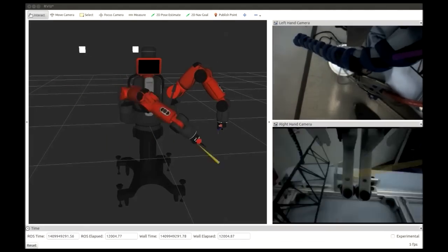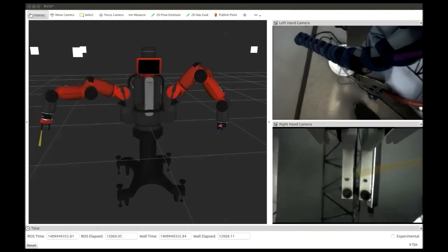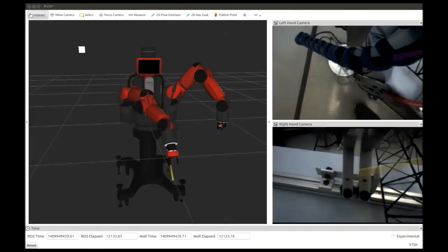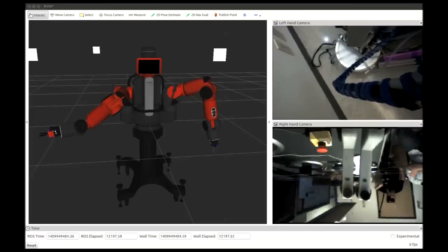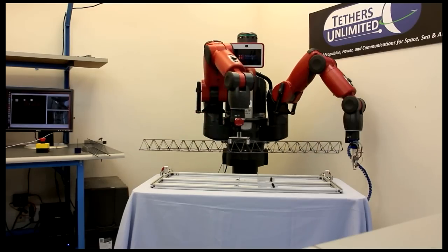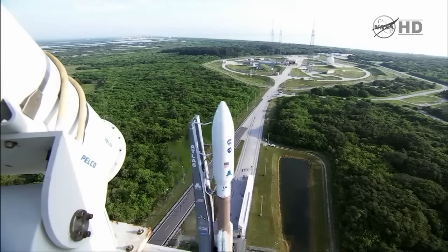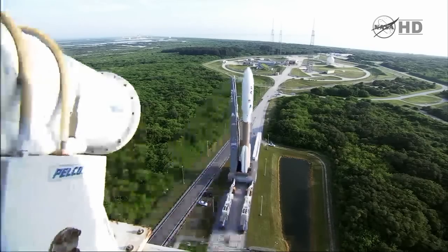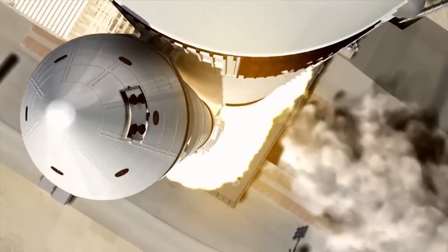We're working on SpiderFab architecture, which combines robotic assembly and additive manufacturing techniques to be able to create large space systems on orbit. And if we can do that, we can enable order of magnitude improvements in performance for cost, packing efficiency, and launch saving,